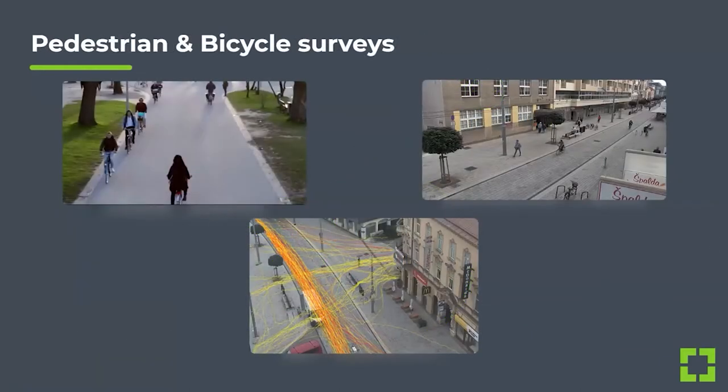The default processing option is called standard processing and it covers the three main use cases related to street cameras. The first one is the typical traffic studies from street cameras — typically vehicle traffic. The second use case is pedestrian studies, which can include, for example, location analytics. The third use case from street cameras is bicycle studies.